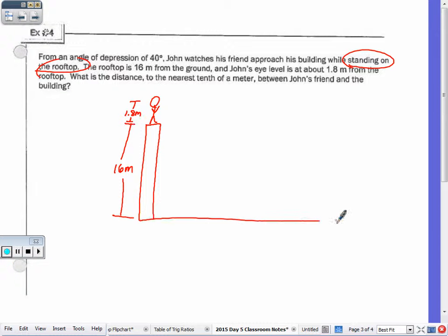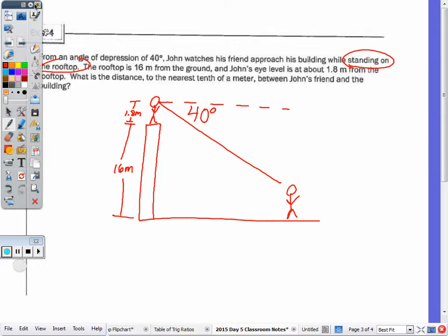So here's the ground. Here's John's friend. He's looking down at his friend. So here's his line of sight. Here would be the horizontal. The angle of depression is 40 degrees. Now to form the triangle, what's this side of the triangle gonna be? 17.8 meters. If I look at the triangle, I could also look at this triangle if I wanted to. But keeping it here, this is gonna be 40 degrees as well.